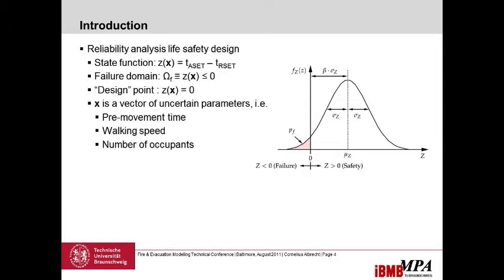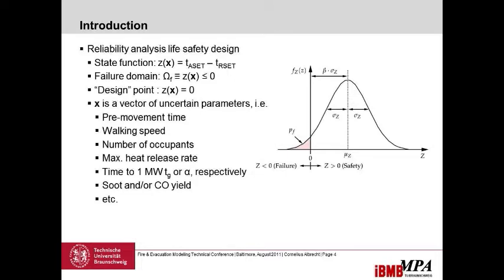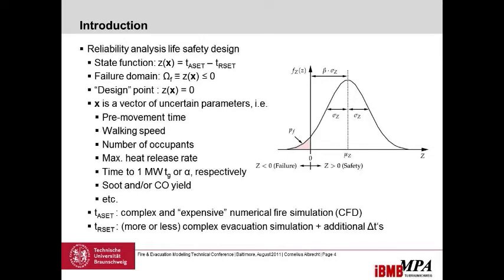In this state function, x is a vector of uncertain parameters. On the evacuation side, that might be pre-movement time, walking speed, or number of occupants. On the fire side, I might have the maximum heat release rate, the fire growth parameter — for example, the time to one megawatt or the alpha parameter — and yields such as the soot yield, carbon monoxide yield, et cetera. To compute the available safe egress time, we use numerically expensive tools like computational fluid dynamics.